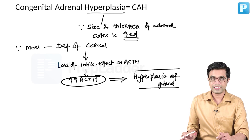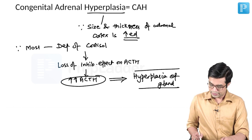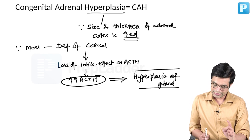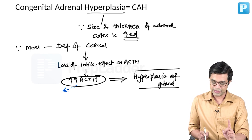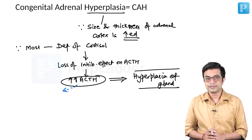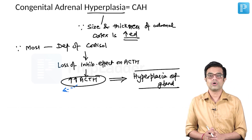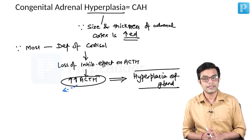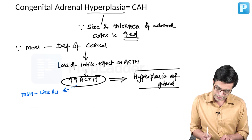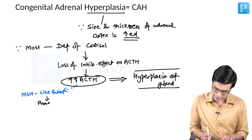When you do an ultrasound, you will find hypertrophy of the gland. Whenever there is a large amount of ACTH — if you remember from basic days — ACTH when produced in large amounts also stimulates melanocytes; it has a melanocyte-stimulating hormone (MSH)-like action. So these patients with CAH are prone to hyperpigmentation.